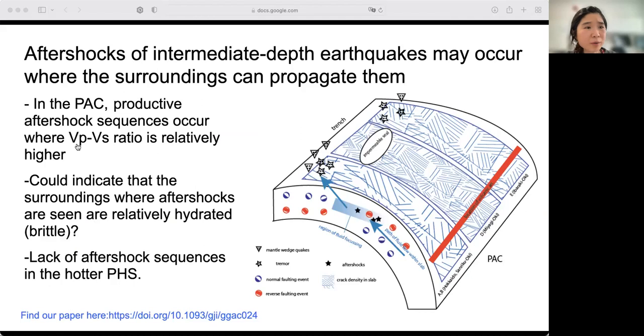All of the productive sequences we found were in the Pacific plate, and productive aftershock sequences occur where Vp/Vs ratio is relatively higher along strike. This is commonly associated with the presence of water, which could indicate that a greater density of hydrated ancient faults which have subducted promotes aftershocks.